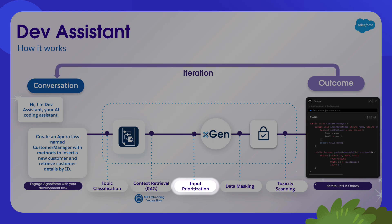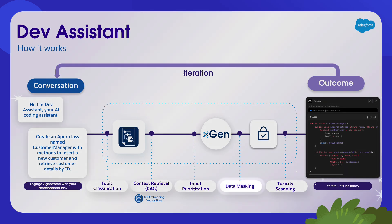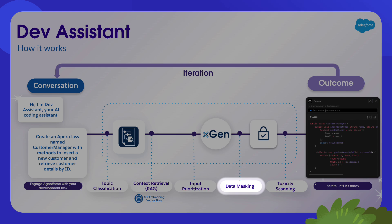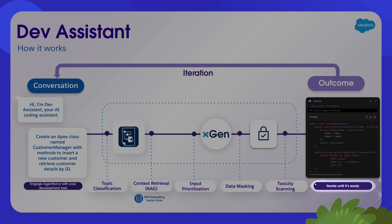This ensures everything fits within the token budget. After input prioritization, Dev Assistant sends the prompt and context to the large language model, XGEN. Once we've gotten the response from XGEN, Dev Assistant performs PII detection and masking over it to protect sensitive information, and it runs a toxicity scan to ensure secure and appropriate outputs. Finally, know that Dev Assistant, in contrast with the previous experience, allows you to maintain a chat conversation and iterate to refine its output according to your prompts.